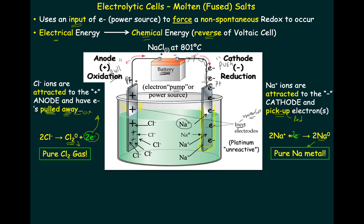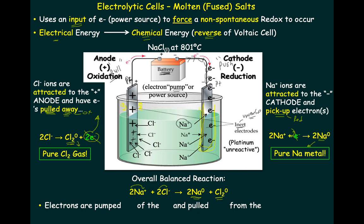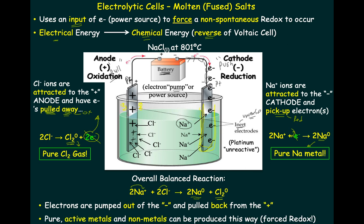Pure sodium metal and pure chlorine gas don't exist in nature. We force this to take place by forcing electrons into sodium and pulling them back from chlorine by force — electrolytically. The overall balanced reaction: when we add these two reactions together, the electrons will cancel. Basically, you're going to get 2Na plus 2Cl giving 2Na(0) and 2Cl(0). The 2+ and 2- cancel to make zero. These are active nonmetals and metals which we can collect, isolate, and then prevent from reacting. Electrons are pumped out of the negative and pulled back from the positive, and pure active metals and nonmetals can be produced in this way.